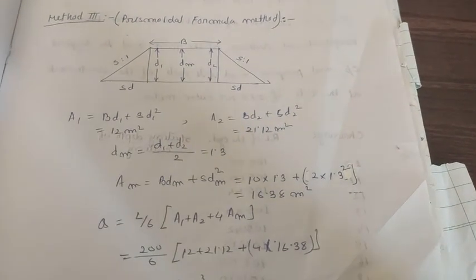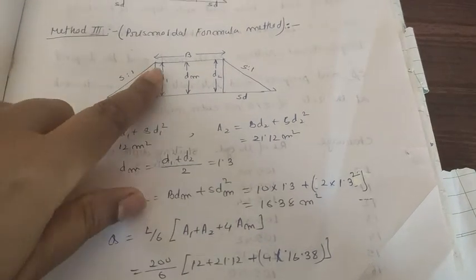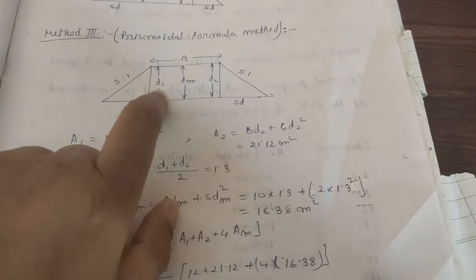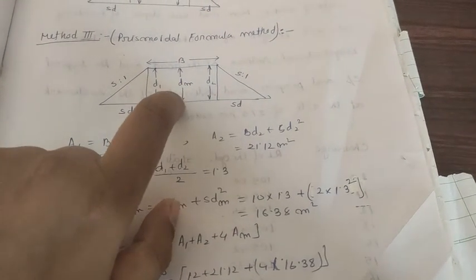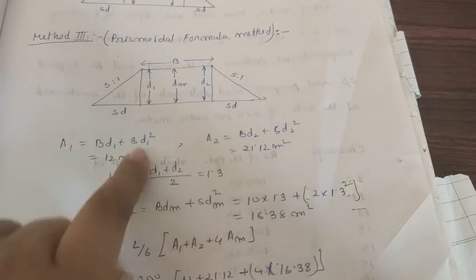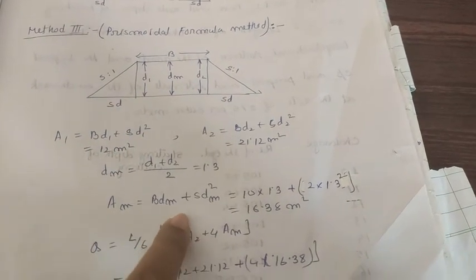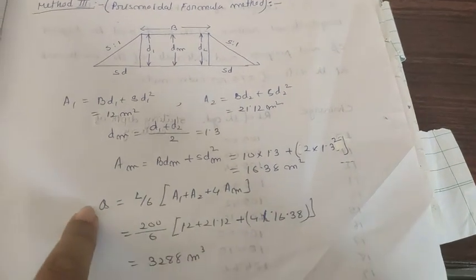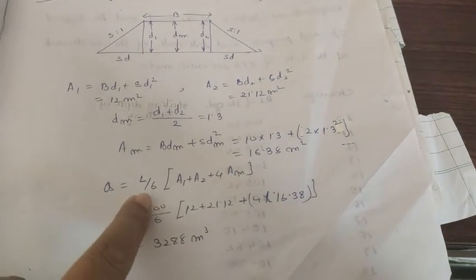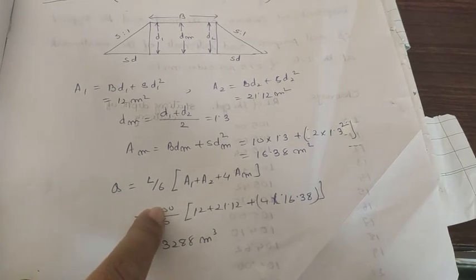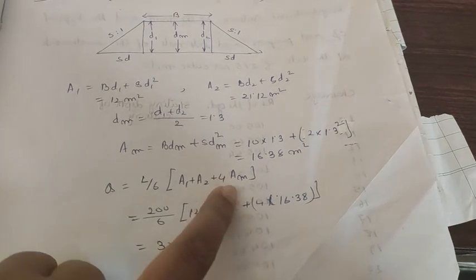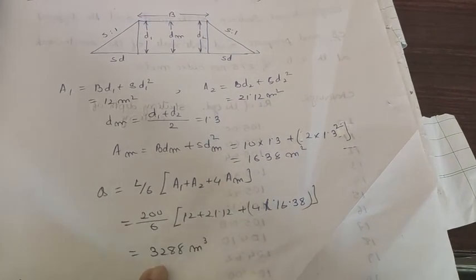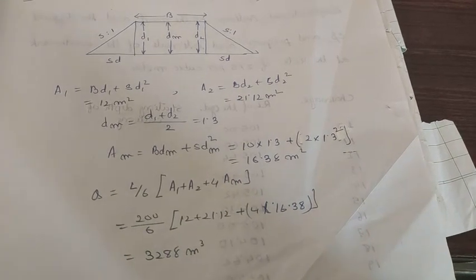Then you have to find out dm. It's d1 + d2 divided by 2. If you refer to my old video lectures, you will know dm = (d1 + d2)/2. You put the values, then you get the answer for calculation of final earthwork. You put according to the formula and find out the answer. Thank you.